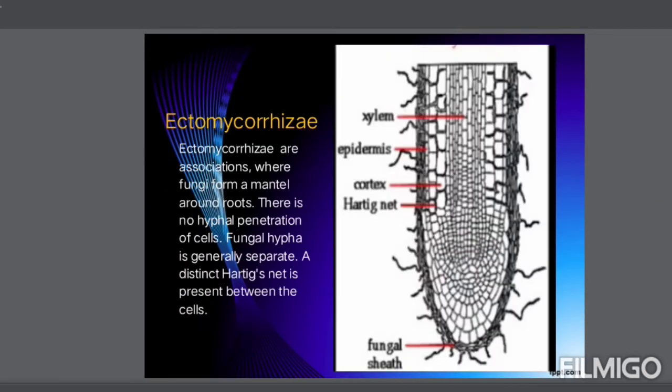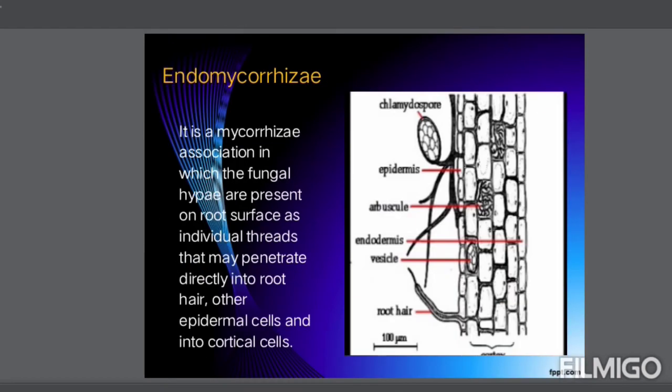What is meant by ectomycorrhiza? When the fungi are present on the surface of the root, they do not penetrate into the cell — they penetrate between the cells. The hyphae are produced between the cells. This is known as ectomycorrhiza.